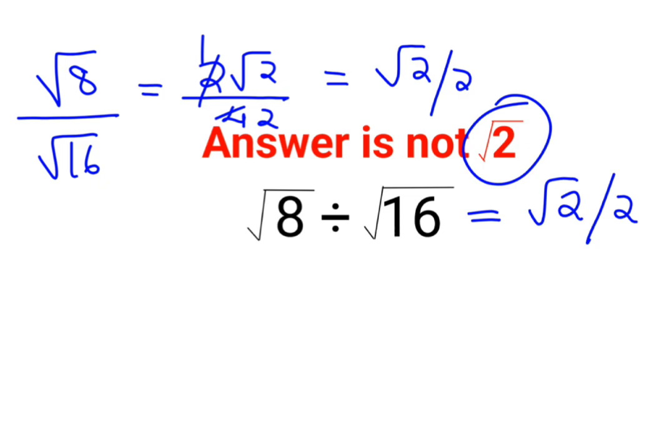A lot of people thought that the answer for this one was root 2 or they thought that the answer for 1 upon root 2. 1 upon root 2 is still okay but in mathematics, we don't like to write roots in the denominator. We need to rationalize this further.